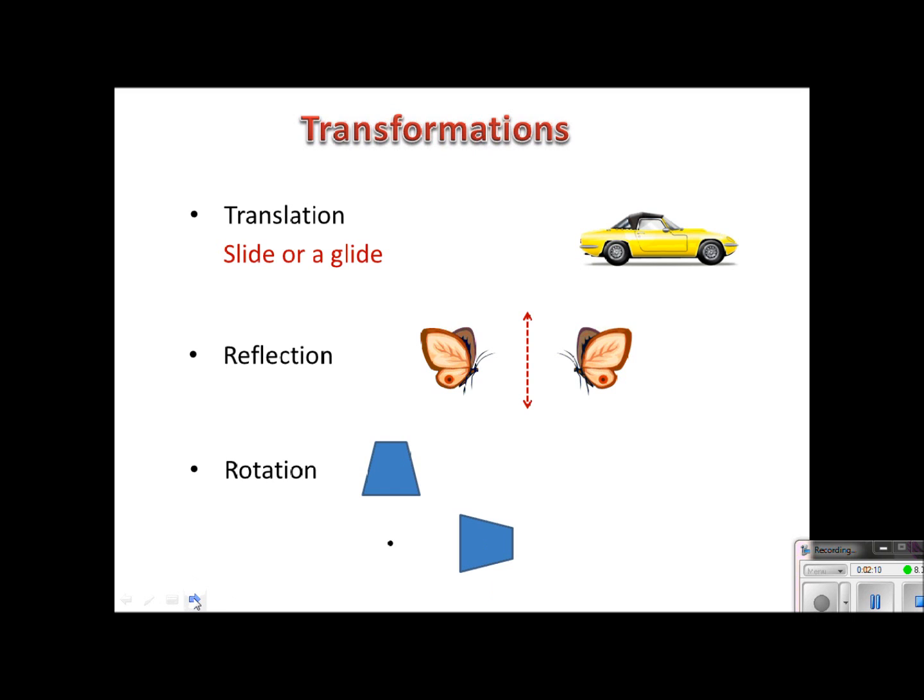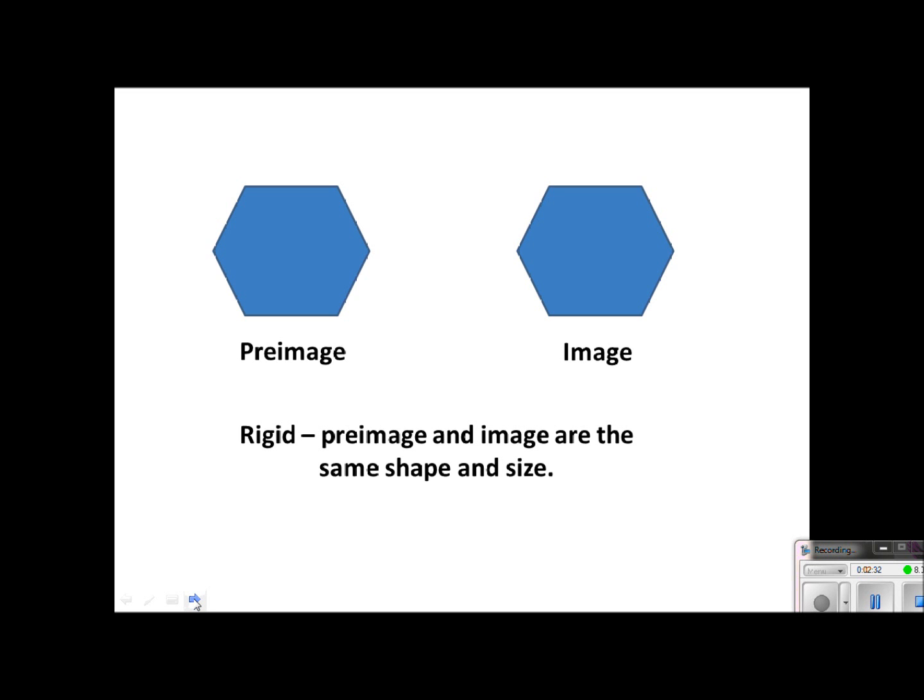A couple of other words that we need to establish. The shape before I do a transformation is called a preimage. After the move, it's called an image. And a rigid transformation means that the preimage and the image are the same shape and size. So this is clearly the same shape and size as this image over here, so this would be called a rigid transformation.